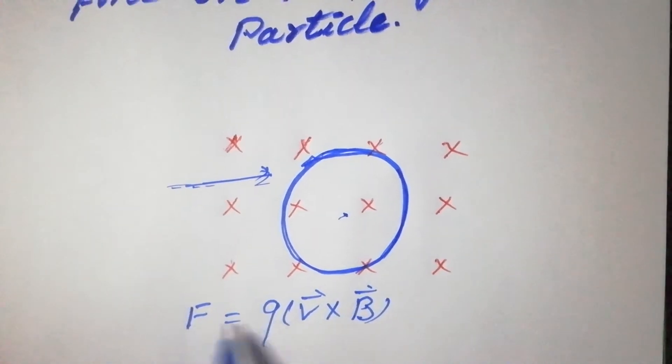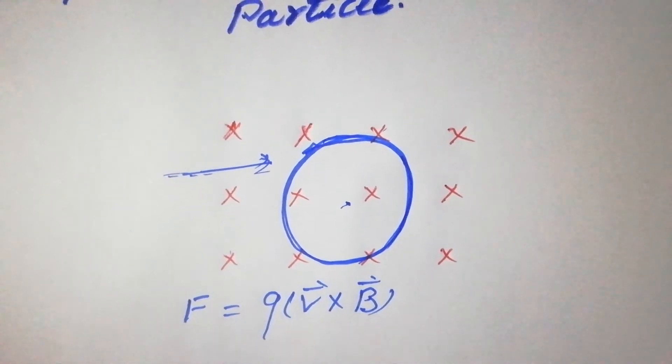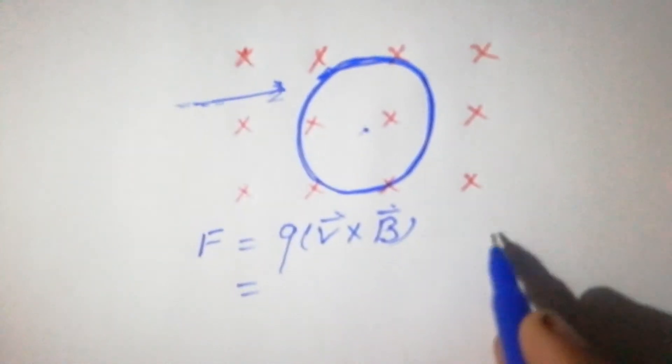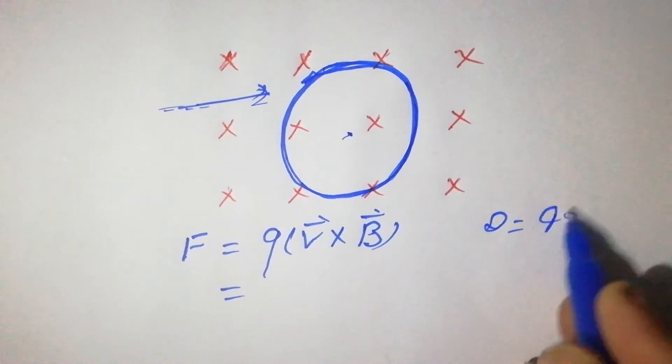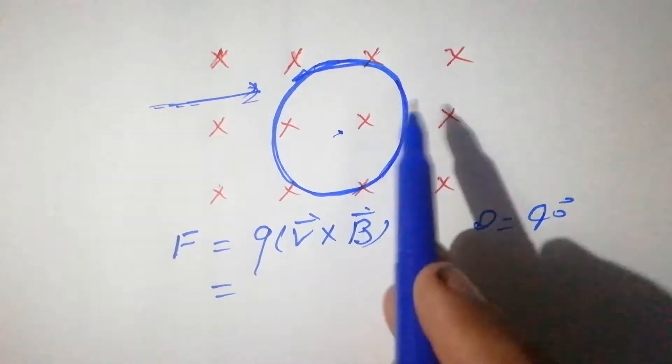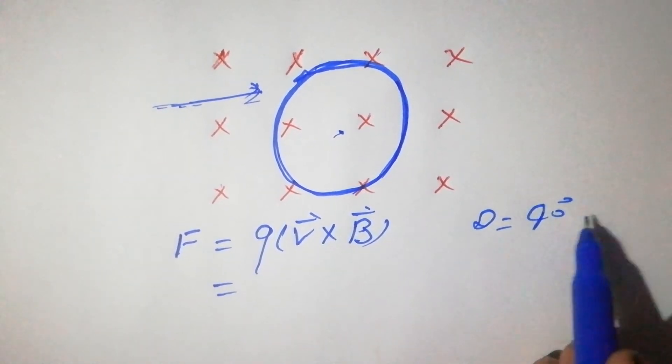The magnetic force is given by F = q(V × B). The angle between V and B is 90 degrees, since the magnetic field is perpendicular and the charged particle is moving in a circle.